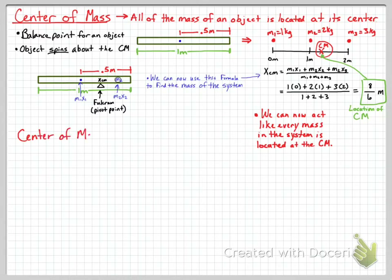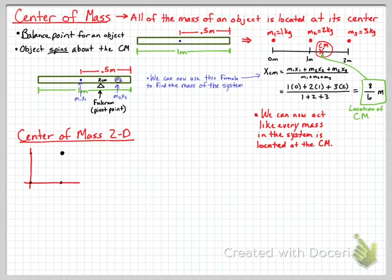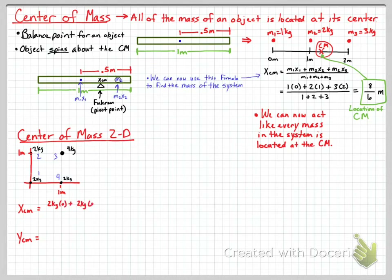Now let's look at center of mass in two dimensions. We're going to place four objects in a coordinate plane. They're one meter away from the origin in the y direction and one meter away in the x direction. The four masses are labeled: 2 kilograms, 2 kilograms, 2 kilograms, and 4 kilograms — labeled as mass 1, 2, 3, and 4.